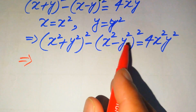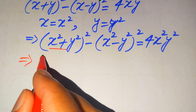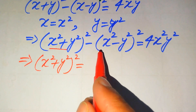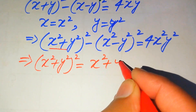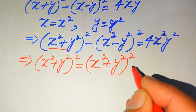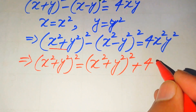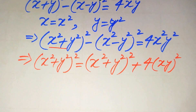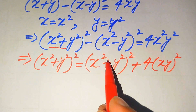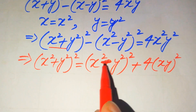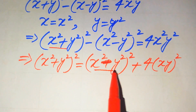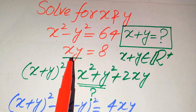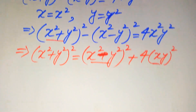We move the negative (x² - y²)² term to the right-hand side, where it becomes positive. So we get: (x² + y²)² = (x² - y²)² + 4(xy)². We can write x²y² as (xy)². Now we substitute the known values: x² - y² = 64 and xy = 8.